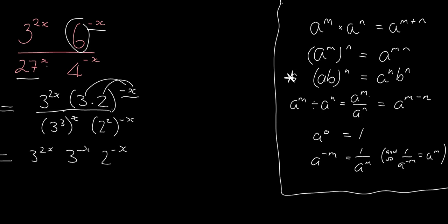That doesn't look very neat, let me just rewrite it. Negative x. And then at the bottom, I am going to be using this rule here. So it is 3 to the 3 times x, so it's 3 to the 3x. And it's 2 to the 2 times negative x, so it's negative 2x.